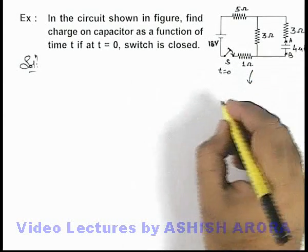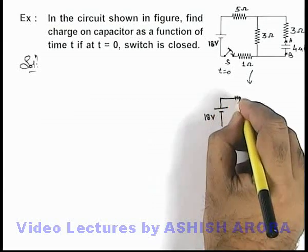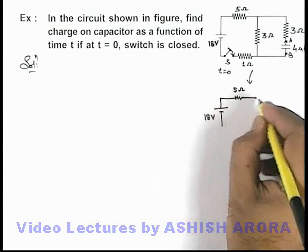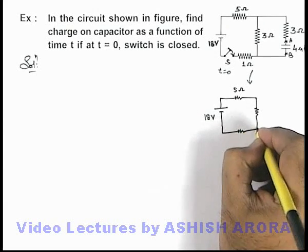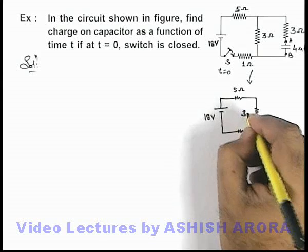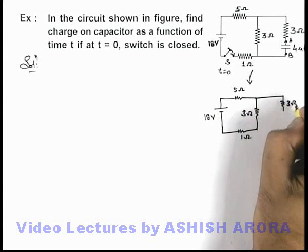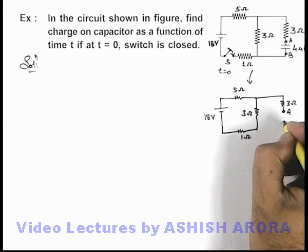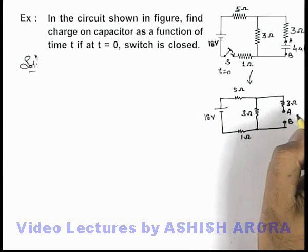So if we just redraw the circuit it'll look like this, in which this is 18 volt battery. There is a 5 ohm resistance, another 1 ohm resistance after closing the switch, a 3 ohm resistance, and here another 3 ohm resistance. A and B terminals are now considered open as we have removed the capacitor.